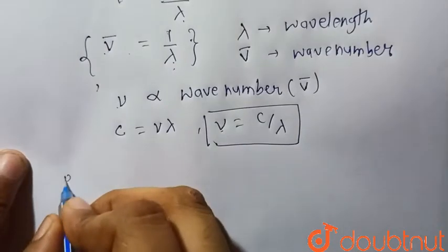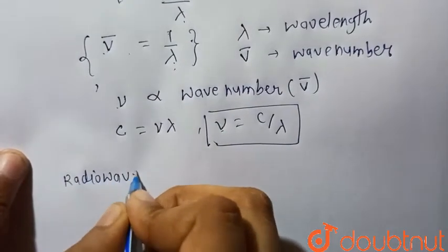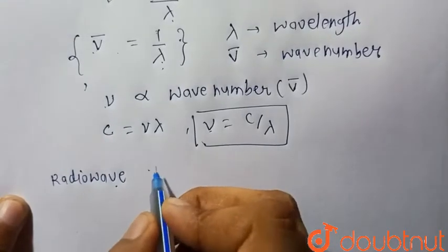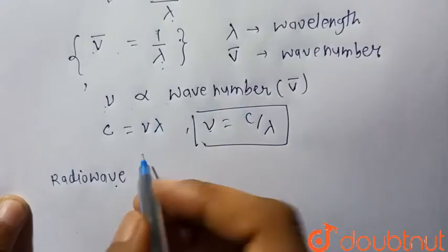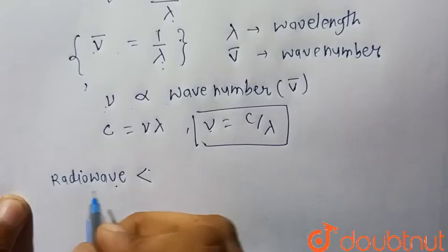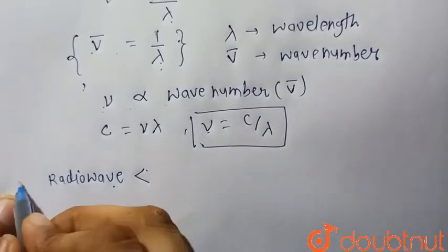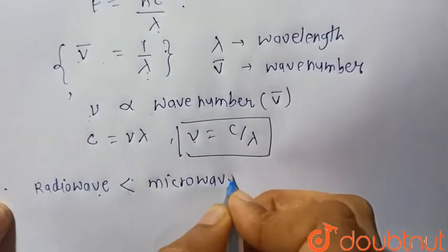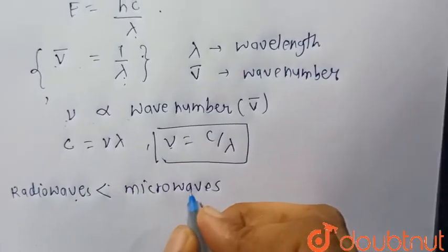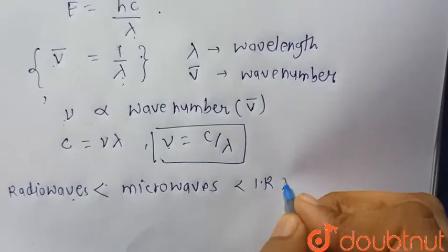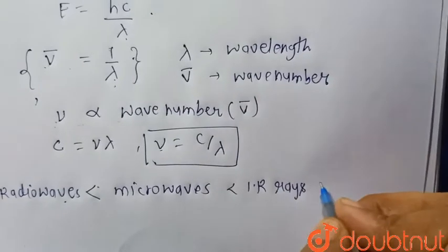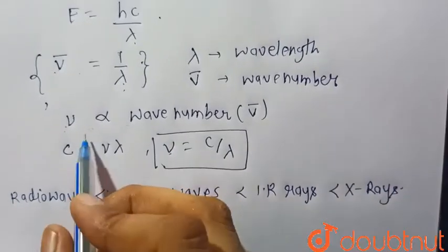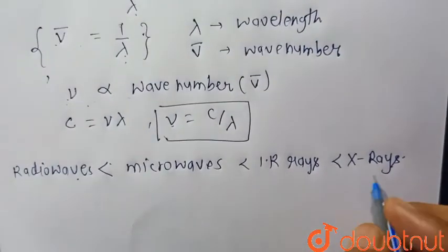The increasing order of frequency of the radiations is as follows: radio waves have the highest wavelength, so they have the least frequency or wave number. The increasing order of frequency and wave number is: radio waves, then microwaves, then infrared rays, then X-rays, because X-rays have the highest frequency.